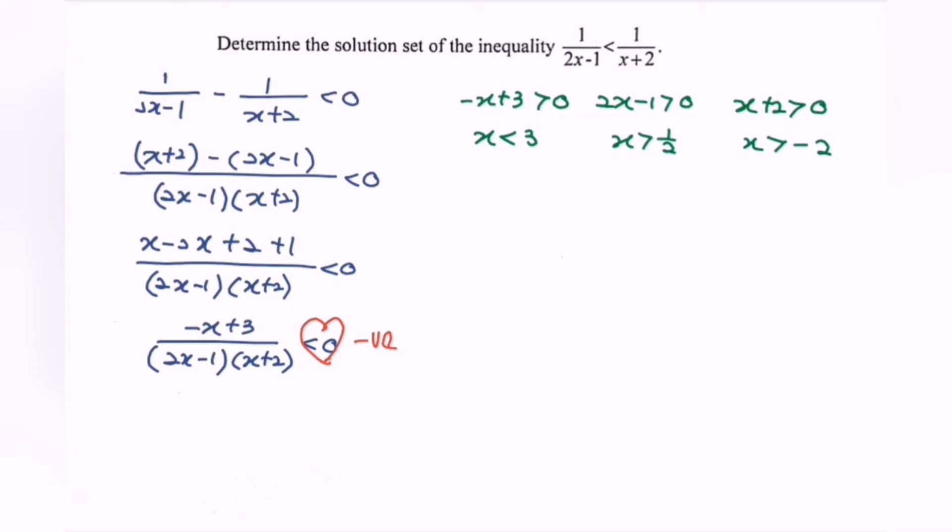Next is to illustrate the situation in a real number line. So I'll illustrate the situation. And we have negative 2 followed by 1 over 2 and then we have 3.